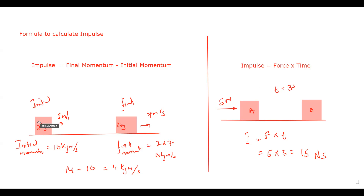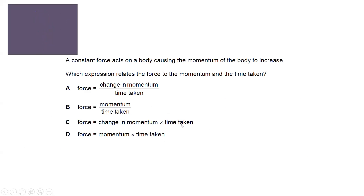Whenever force and time are given, multiply them to get impulse. If speeds are given, find initial and final momentum and take the difference. That is why C was the right answer.